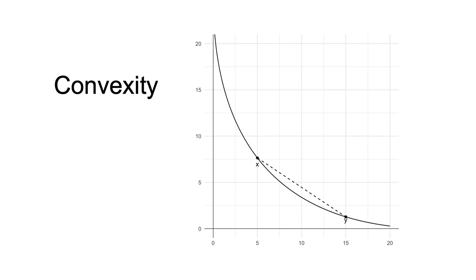Any weighted combination of x and y, which would be on the line between the two, can be seen to be strictly preferred to either x or y as it would be on a higher indifference curve, a curve further from the origin.